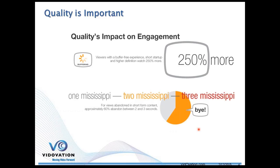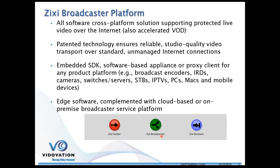So what is Zixi, and how does Zixi fit into all of this? Zixi is basically three different pieces: the feeder piece, where encoding or transmission is done; the broadcaster piece, which sits in the middle; and the receiver or decoder piece.